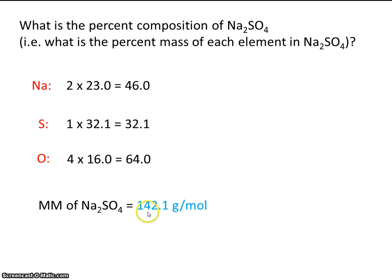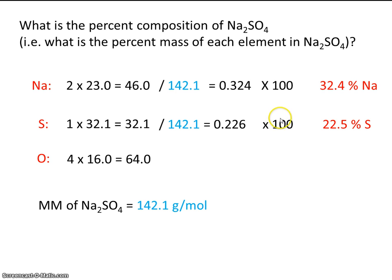Well, if we have 142.1 grams, we know that 46 grams of that are sodium. So if we do the part that is sodium divided by the whole times 100, that should tell us the percent of the sample that is sodium. And we're going to follow the same format for sulfur. The part that is sulfur in the whole sample, and of course, times 100.